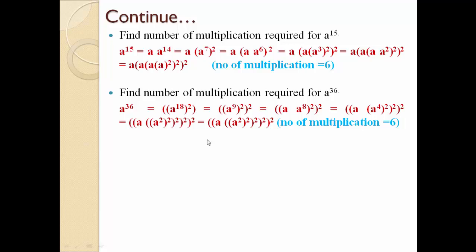Now we can find how many multiplications are required. There is only 1 actual multiplication and 5 squarings, so total 5 plus 1 equals 6 multiplications are required. Every time we check the 3 conditions as per the recurrence, and at the end we identify how many multiplications and how many squarings are there — based on that we can determine the total multiplications required for any exponential.